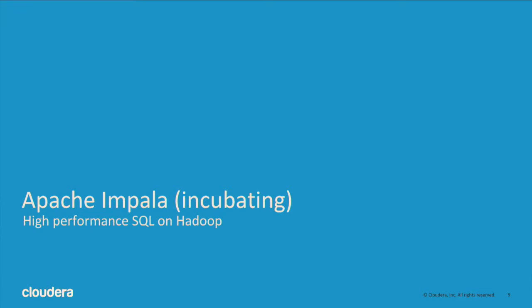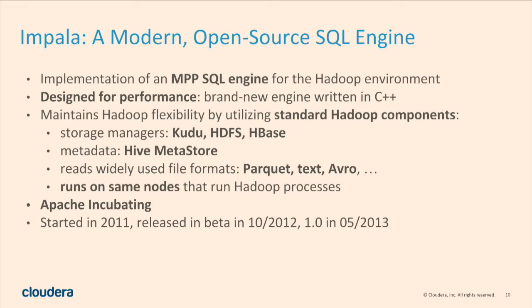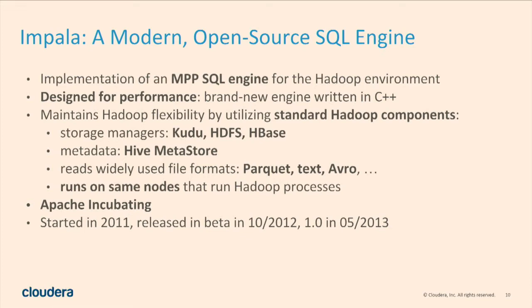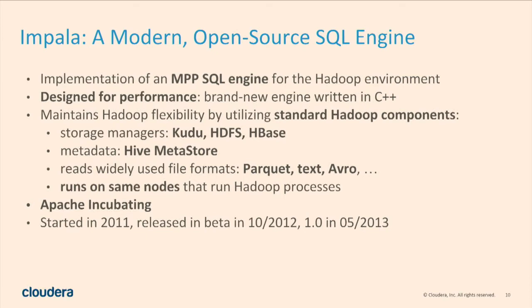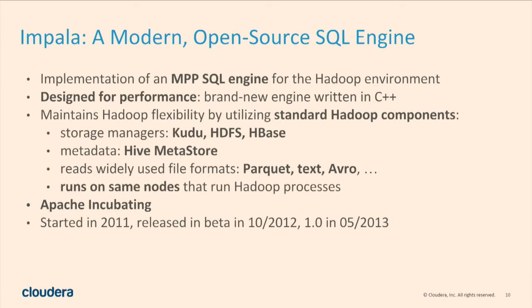Apache Impala is a modern SQL engine for Hadoop — open source, part of the Apache incubator. Impala takes ideas from MPP — massively parallel processing databases like Teradata, Vertica, and Aster Data — and brings them into the Hadoop ecosystem. It's designed for very good performance for BI-type applications and was written from scratch in C++ based on today's hardware to get maximum performance.